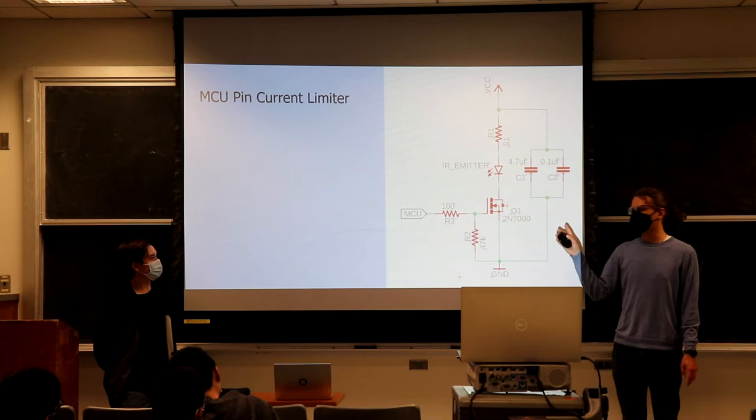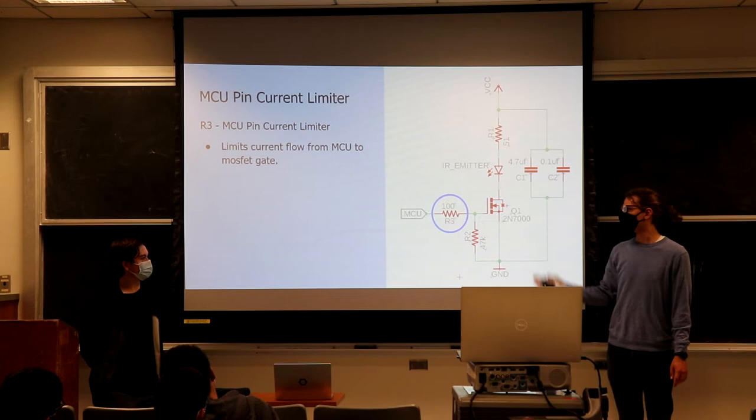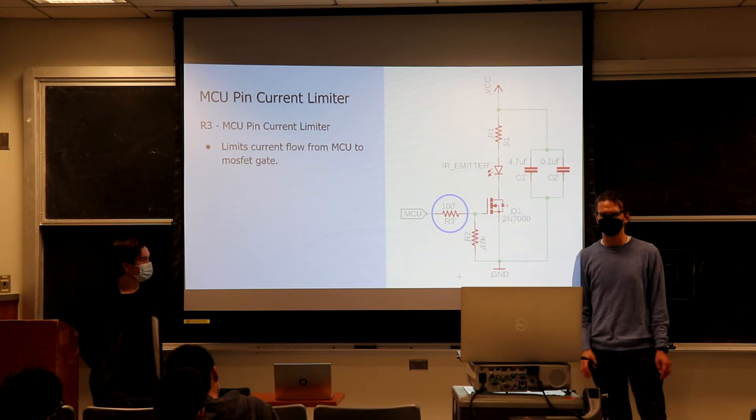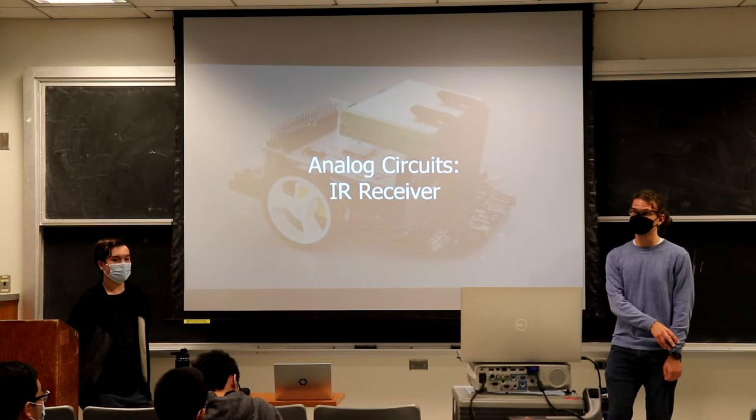We've got one more resistor to talk about — it's related to this transistor here. Basically, this limits the current from the microcontroller to the MOSFET so that we don't damage our transistor. We've got about a 100-ohm resistor just sitting right there. Now, let's talk about our IR receiver, which will take in the light that we have just emitted.